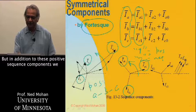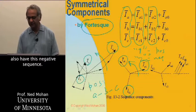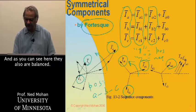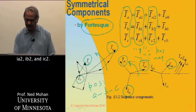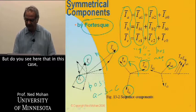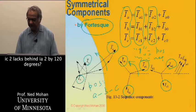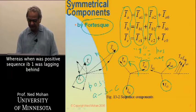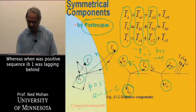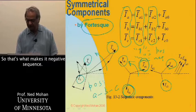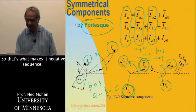But in addition to these positive sequence components, we also have this negative sequence. As you can see here, they also are balanced: Ia2, Ib2, and Ic2. But in this case, Ic2 lags behind Ia2 by 120 degrees. Whereas when it was positive sequence, Ib1 was lagging behind Ia1 by 120 degrees. That's what makes it negative sequence.